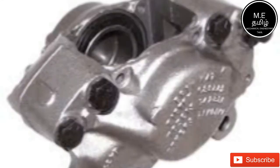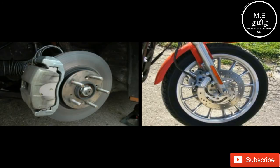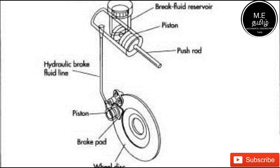Caliper brake — brake caliper. The disc brake consists of a brake caliper, piston, rotor, brake pad, and wheel disk.